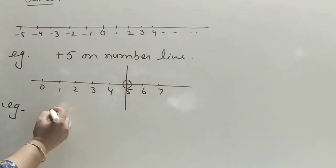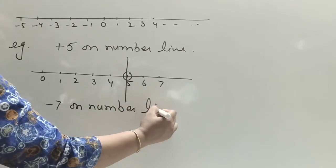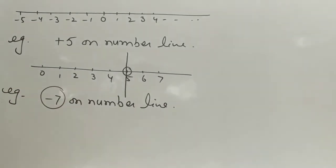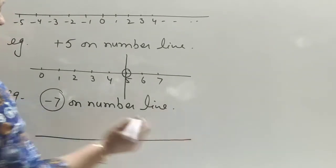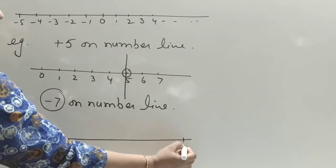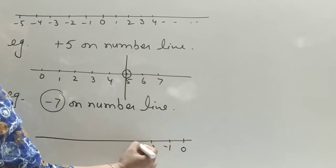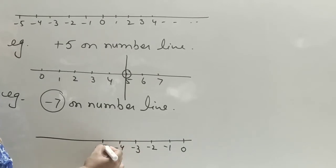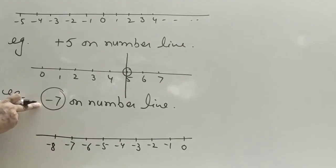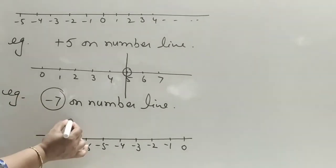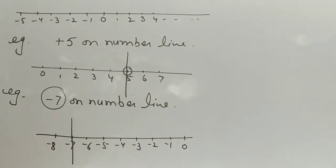Another example: if we have to represent minus seven on the number line, first observe whether it is a positive or negative number. Since it is negative, we start from zero and move left: minus one, minus two, minus three — with equal spaces — minus six, minus seven, minus eight. We highlight minus seven. By this way you can represent an integer on the number line.